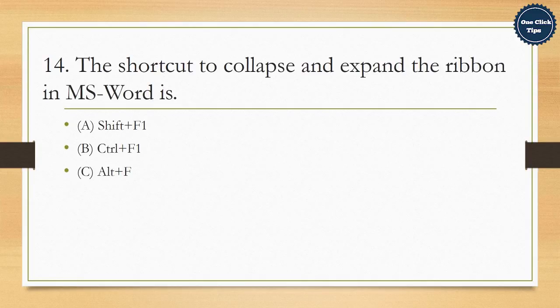14. The shortcut to collapse and expand the ribbon in MS Word is A. Shift plus F1, B. Control plus F1, C. Alt plus F1, D. Alt plus Ctrl plus F1. The correct answer is B. Control plus F1.